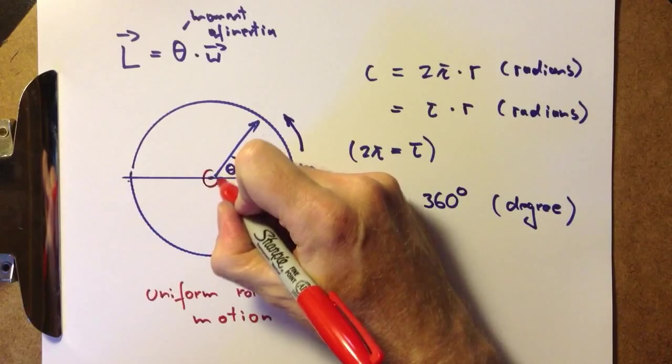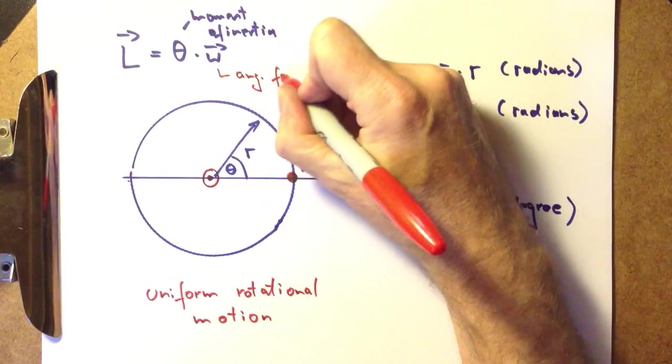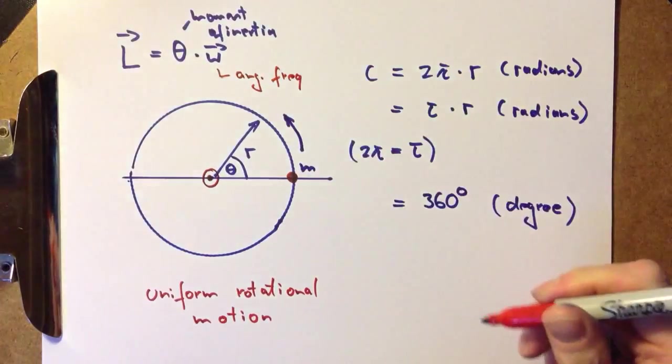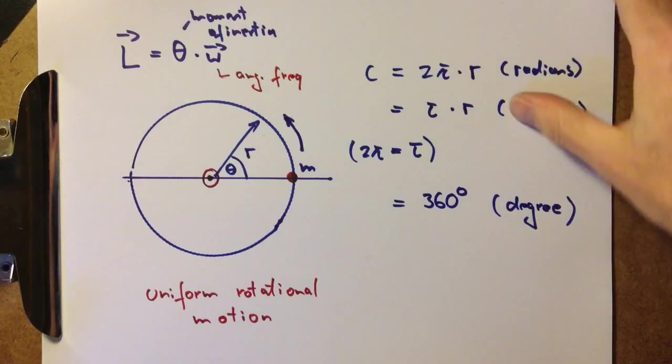Angular frequency. And we call this motion uniform rotational motion.